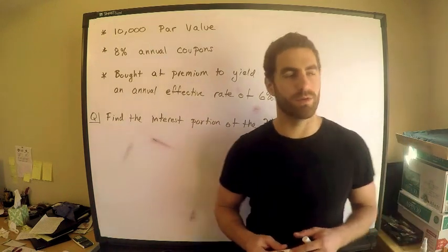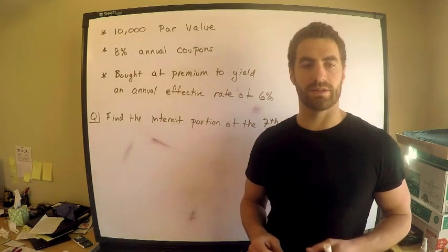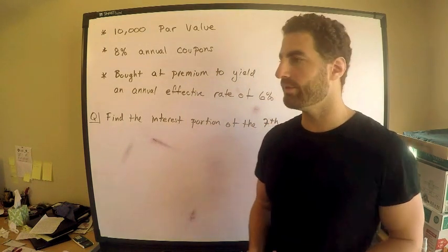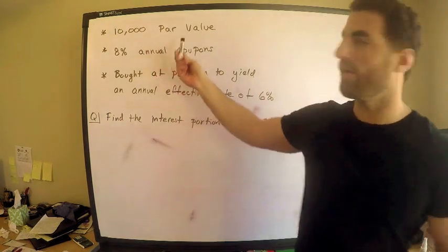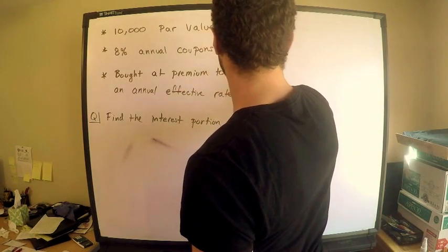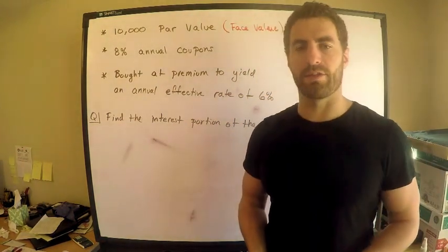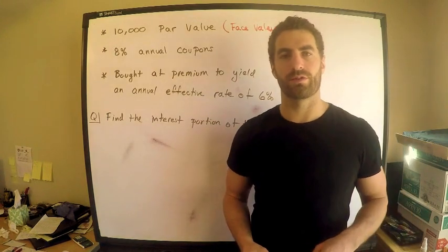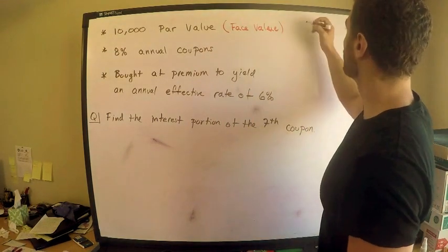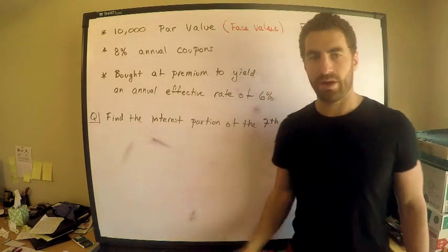I've already gone through these arguments mathematically and I'm considering making a video about it if people find it useful. Let me explain in more detail with this example. We have a $10,000 par value, which is the same thing as the face value — sort of what the bond is worth. We have notation for this: F equals 10,000.